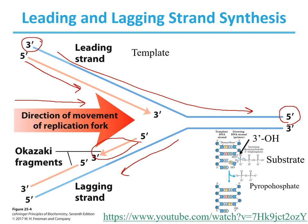Parental DNA strands serve as a template. Nucleoside triphosphates serve as substrates. The nucleophilic OH group at the 3' end of the growing chain attacks the alpha phosphate of the incoming nucleoside triphosphate. This attack releases a pyrophosphate, which is a good leaving group. The pyrophosphate ultimately hydrolyzes to two inorganic phosphates and releases energy. This second hydrolysis also helps drive the reaction towards synthesizing the DNA polymer.